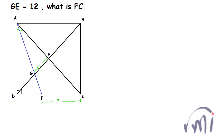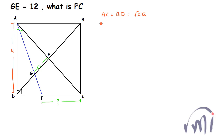To solve this, let me first assume each side of the square is equal to A. If each side is equal to A, then diagonal AC will be equal to diagonal BD, and both of them will be equal to root 2 times A. Since it is a square, the diagonals will bisect each other at their intersection point. So AE will equal EC will equal DE will equal EB.